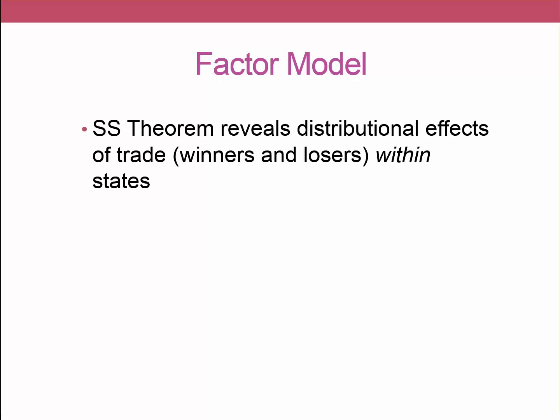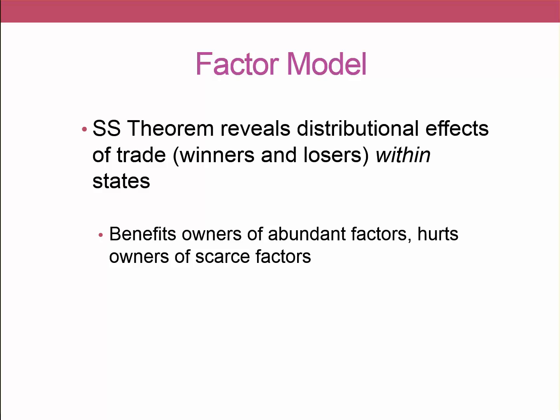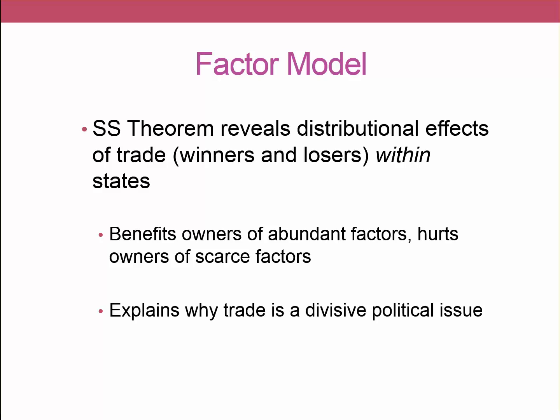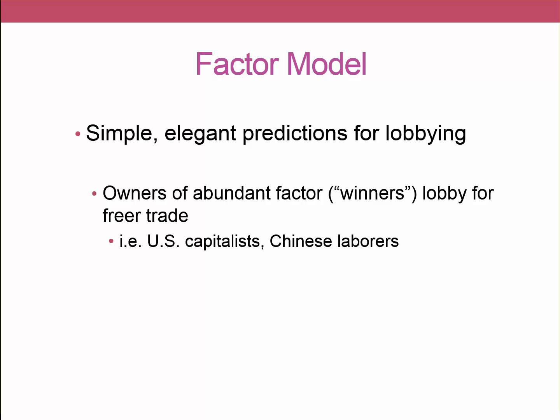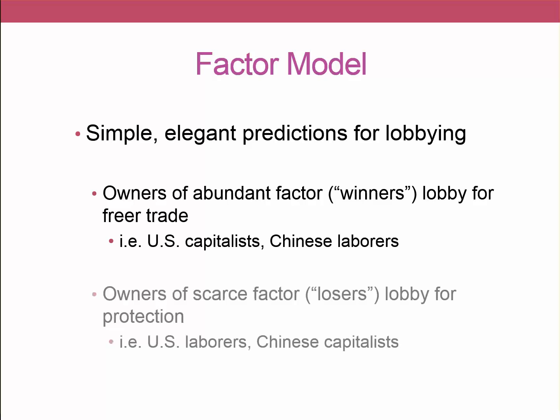The factor model, or Stolper-Samuelson theorem, gives us a theoretical model explaining the distributional effects of trade within states. Free trade benefits owners of abundant factors but hurts owners of scarce factors, helping us understand why trade is a divisive political issue — someone may lose their job under free trade, while another gains more income. The factor model gives simple, elegant predictions for lobbying: owners of the abundant factor — the winners — are expected to call representatives and advocate for free trade, while owners of the scarce factor — the losers — lobby for protection.